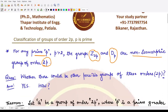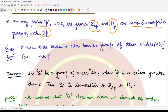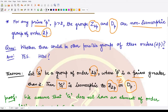To answer this question, we have a theorem: if G is any group having order 2p, where p is a prime number greater than 2, then G is either isomorphic to Z₂ₚ or isomorphic to Dₚ. Since Z₂ₚ and Dₚ are not isomorphic to each other, G is isomorphic to exactly one of them.